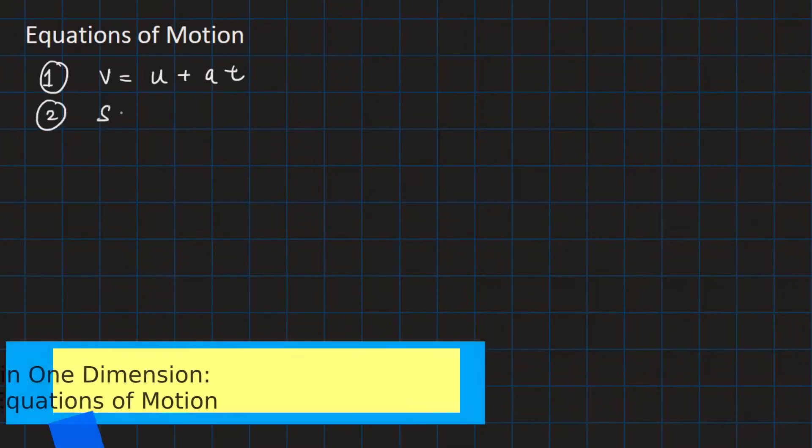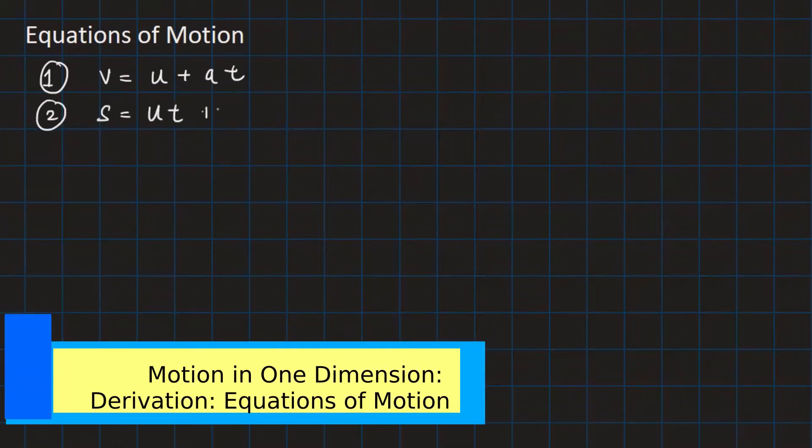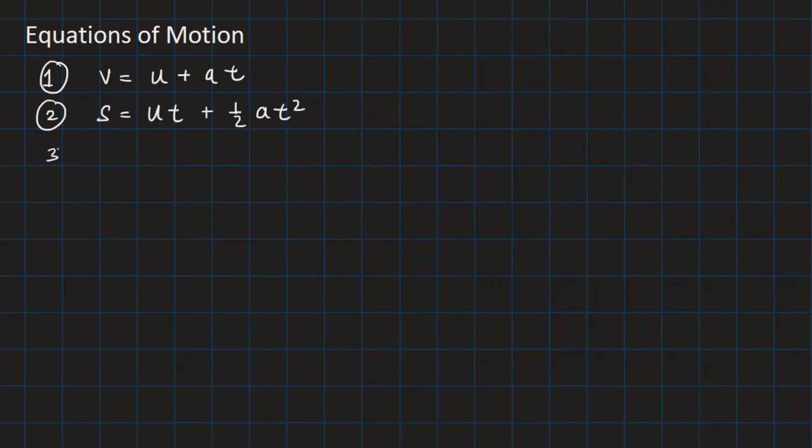There are three equations of motion. v equals u plus at, s equals ut plus half at squared, and v squared equals u squared plus 2as.